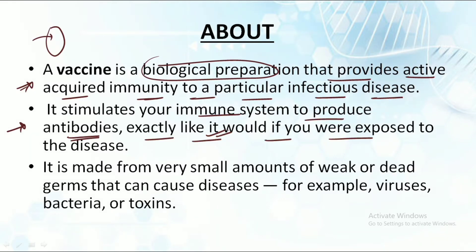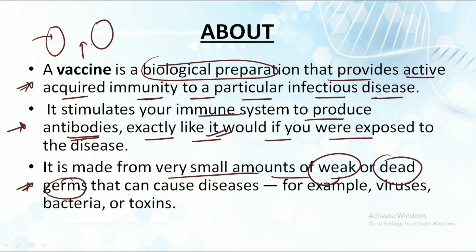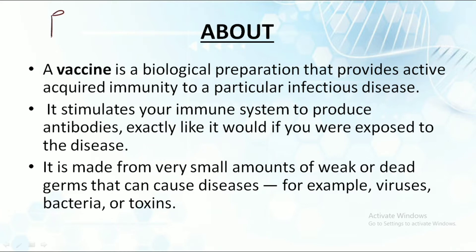A vaccine helps our body get prepared for the actual infection if it occurs in the future. It is a medicine given prior to any infection so that our body can get prepared for whatever disease it is going to face. It is made up of a very small amount of weak or dead germs that can cause the disease — for example, viruses, bacteria, or toxins.